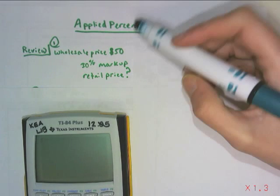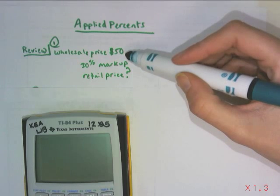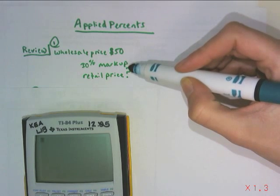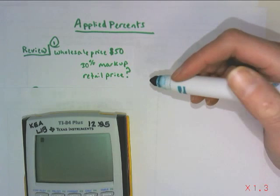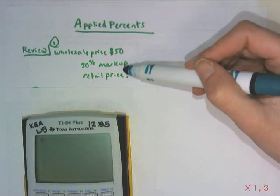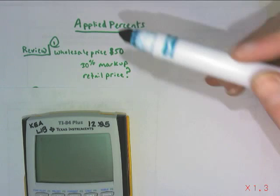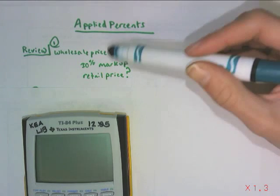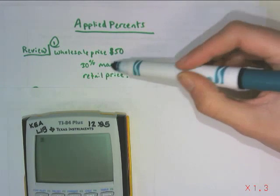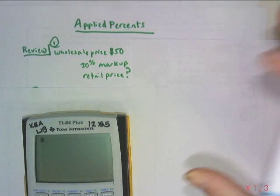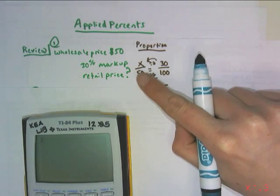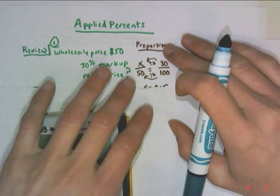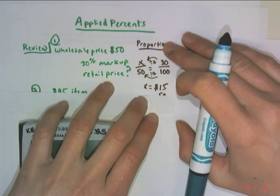So just as a review, if you had a $50 item and the store marked it up by 30% and you were asked to find the retail price, what we had done before is this is a two-step process. You first find 30% of the 50, and then you add it on to the 50 so that the final retail price is 30% above 50. So you can do this with a proportion, and you'd use the percent proportion to find what 30% of 50 is, and you see that the answer is $15.